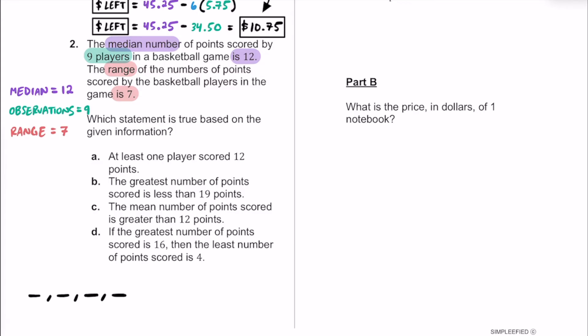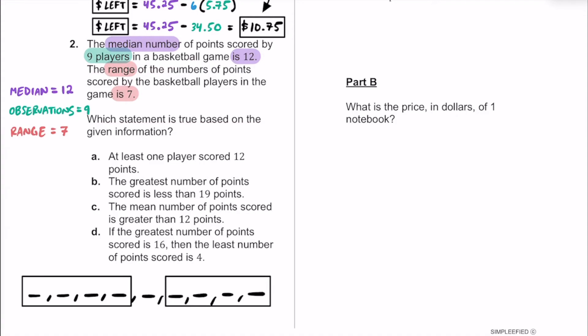We set up nine spaces — one through nine. Since the median is 12 and there's an odd number of data points, the middle (5th) value must be exactly 12. Four data points are in the lower half and four are in the upper half. The four lower observations must be 12 or smaller, and the four upper observations must be 12 or greater.